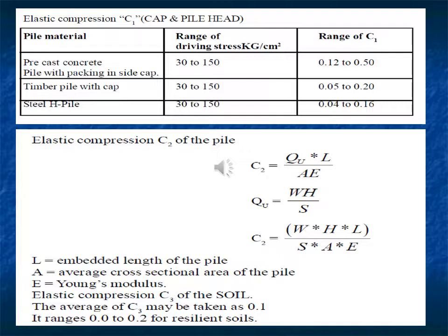Elastic compression C2 of the pile is given by: C2 = Q_U·L / (A·E), where A is the average cross-sectional area of the pile, E is Young's modulus, and L is the embedded length of the pile. Elastic compression C3 of the soil: the average value of C3 may be taken as 0.1.